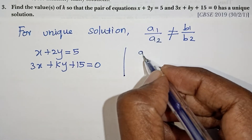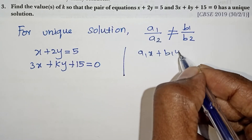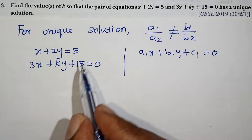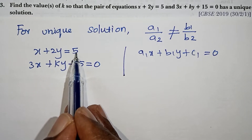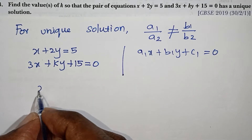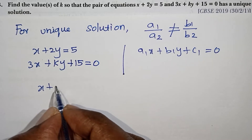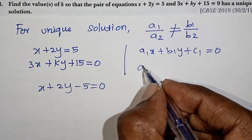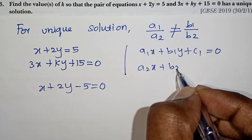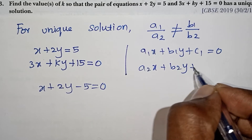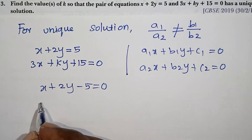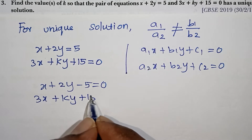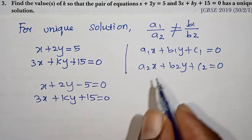The general form is equal to 0. So the first equation is x plus 2y minus 5 is equal to 0. The second equation is a2x plus b2y plus c2 is equal to 0.